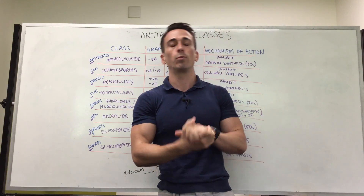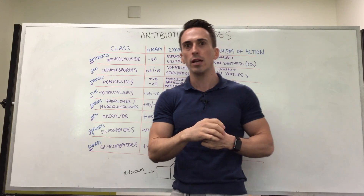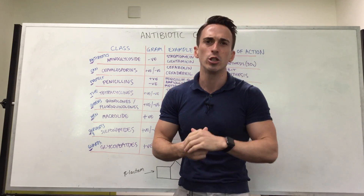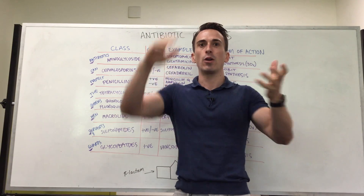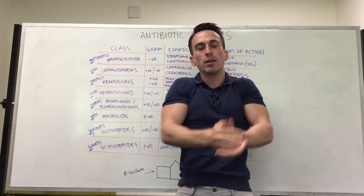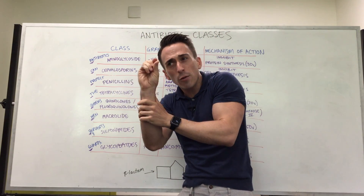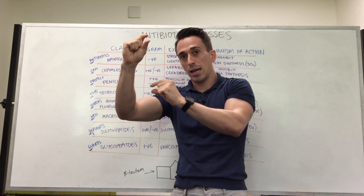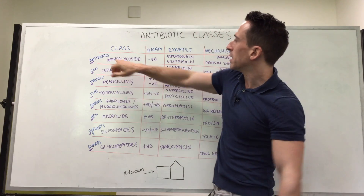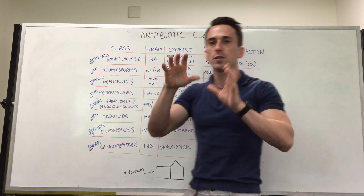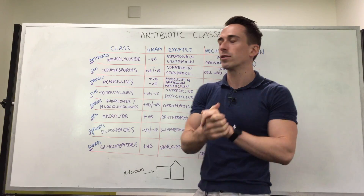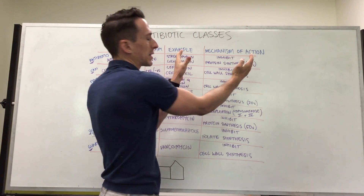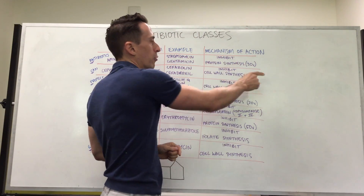Aminoglycosides kill off gram-negative bacteria specifically. Watch the video where I outline the differences between gram-positive and gram-negative. One of the major differences is gram-positive bacteria have a very big cell wall surrounding them, while gram-negative bacteria have a very thin cell wall and two membranes — two phospholipid bilayers. Two main examples of aminoglycosides are streptomycins and gentamicins.